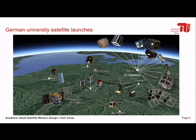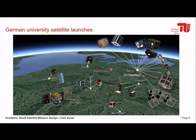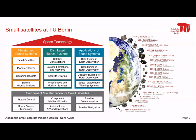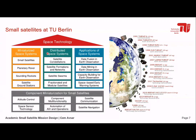Looking at the landscape in Europe, Berlin with 21 satellites — counting toward 30 — in orbit is the small satellite hub of Europe, where most small satellites are developed, not only by the university but also by companies located there. The Chair of Space Technology, in the Department of Aeronautics and Astronautics, focuses on miniaturization of space systems: small satellites, small rovers, small sounding rockets, and ground stations.